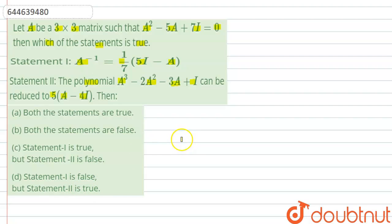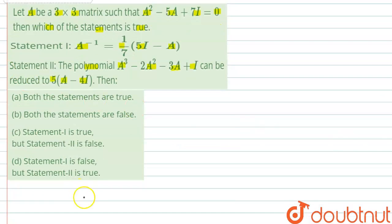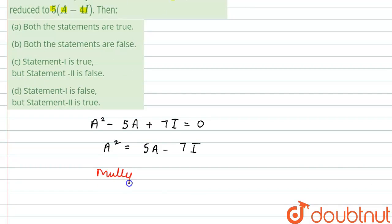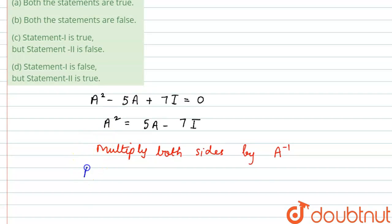We have been given an equation, and based on that equation we need to find whether statement 1 and 2 are true or false. The equation given to us is A² minus 5A plus 7I equals 0. We can rearrange and write this as A² equals 5A minus 7I. Now we will multiply both sides by A inverse.